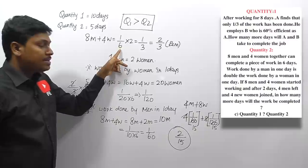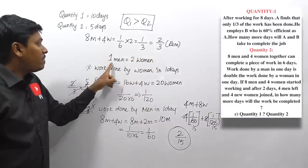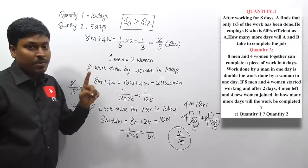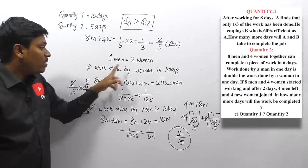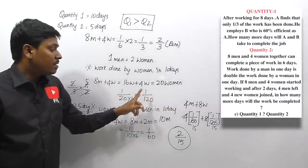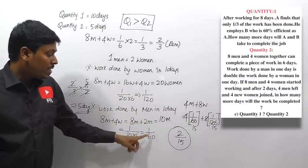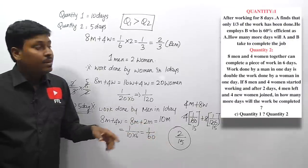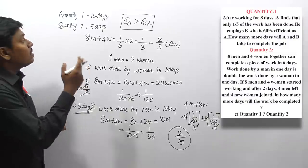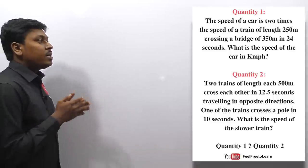Recap: 8 men + 4 women complete work in 6 days; 1 man = 2 women. One woman's daily work = 1/120; one man's = 1/60. After 4 men leave and 4 women join, combined capacity = 2/15 per day. With 2/3 remaining, it takes 5 days. Quantity one (10 days) is greater than quantity two (5 days).